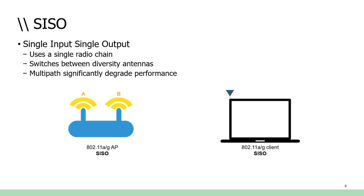Legacy protocols — 802.11 prime, b, g, and a — were all SISO: single-in, single-out, using a single radio chain. Some devices later added a second antenna for diversity, allowing the device to choose whichever antenna had the best connection for a given conversation. But this was still a single-stream transmission — not full MIMO — and was a feature released just before 802.11n arrived.